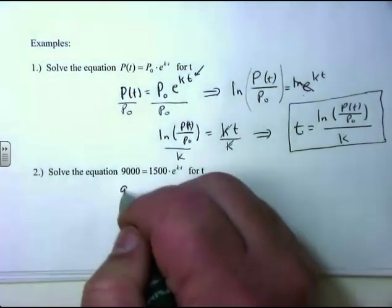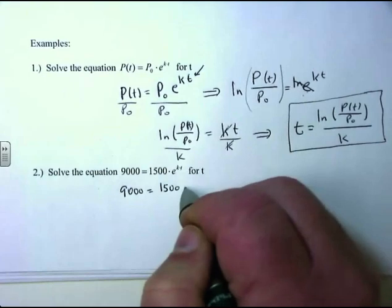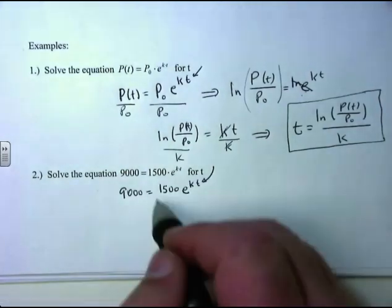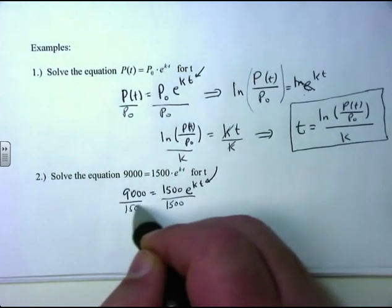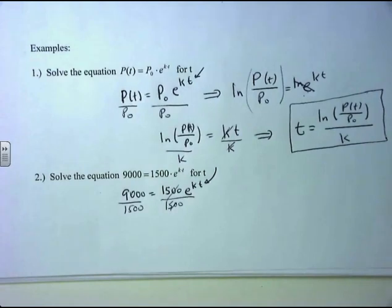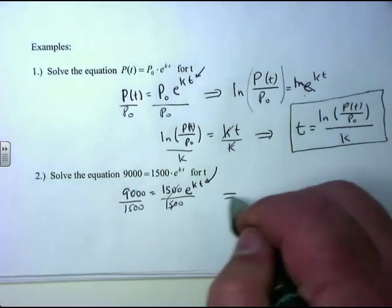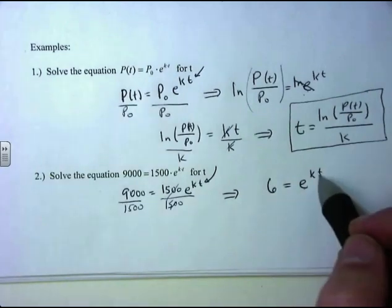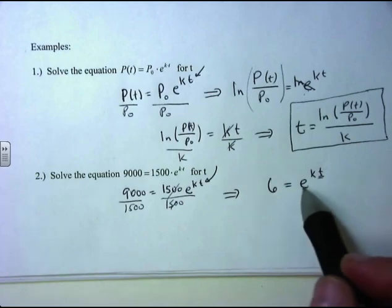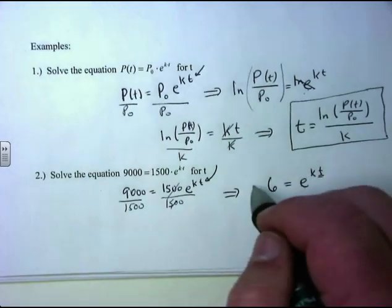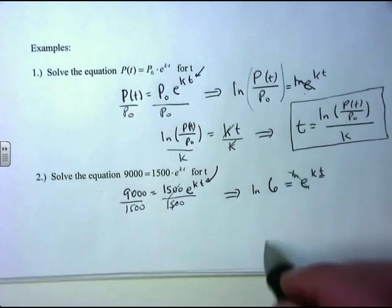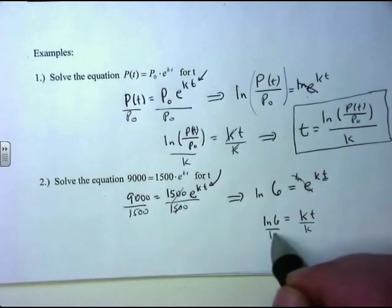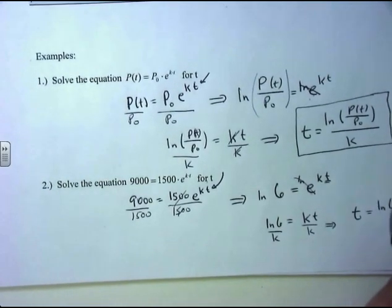Notice where T is located — it's in the exponent of an E. So first, get the E by itself by dividing both sides by 1,500. 9,000 divided by 1,500 is 6, giving me 6 equals E to the KT. I need to kill off the E base, so I take the natural log of both sides. The natural log of E cancels, leaving the natural log of 6 equals K times T. Dividing both sides by K gives the solution: T equals the natural log of 6 divided by K.